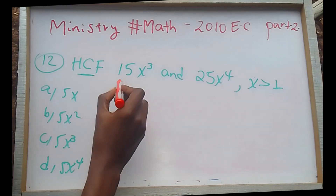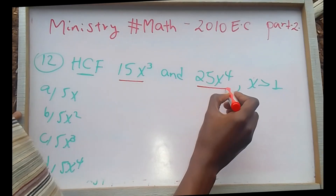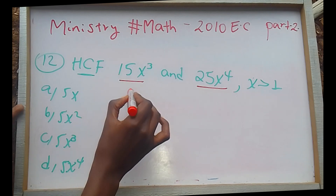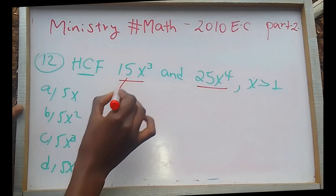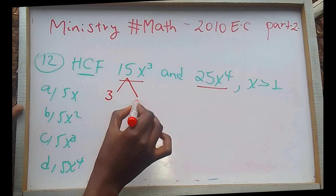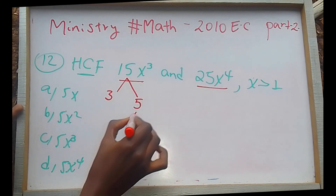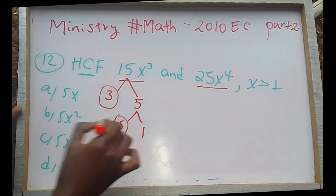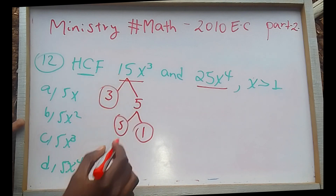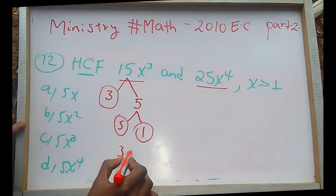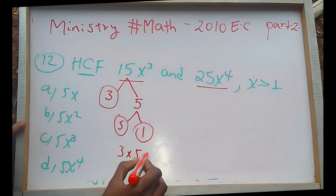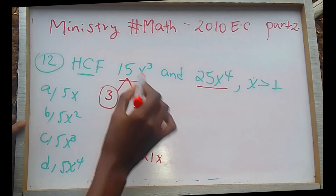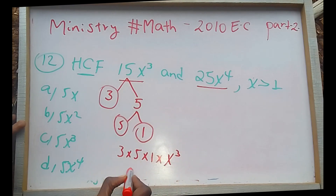You can work it out the same way. Now we are going to look at the next question. When divided by 3 it is 5, and when divided by 5 it is 1. So we have 3, 5, and 1.